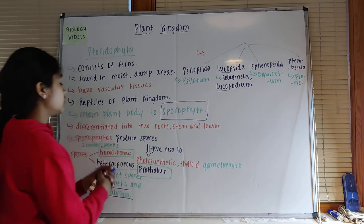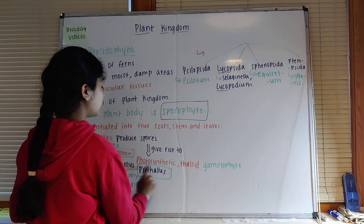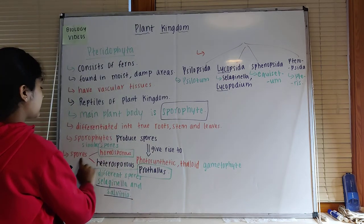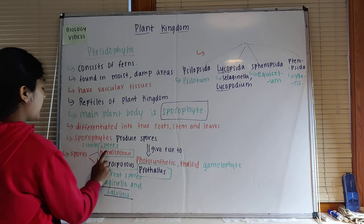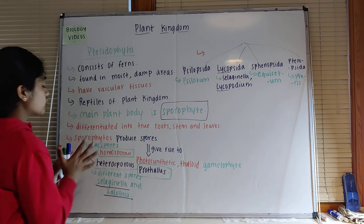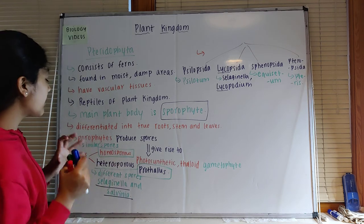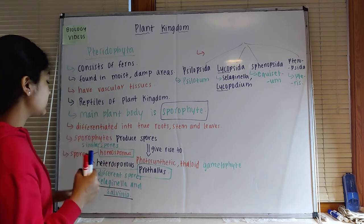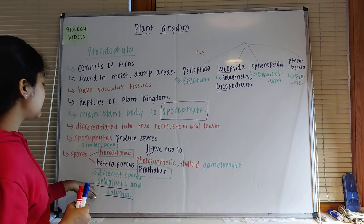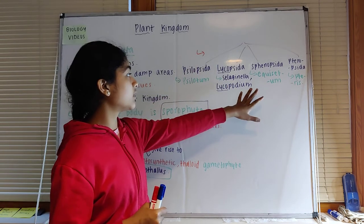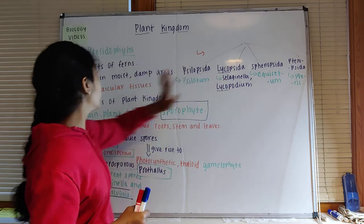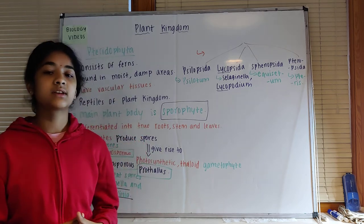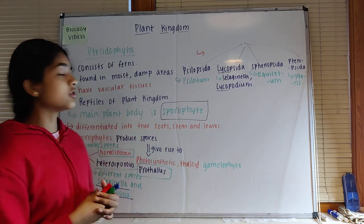The sporophytes produce spores, and these spores give rise to the prothalus, which is a photosynthetic thaloid gametophyte. Spores can be of two kinds: homospores, where similar spores are present, and heterospores, where different kinds of spores are present — examples being Selaginella and Salvinia. We also looked at the four categories of pteridophytes: Psilopsida, Lycopsida, Sphenopsida, and Pteropsida. In this video we discussed about pteridophytes, which are also termed as ferns.